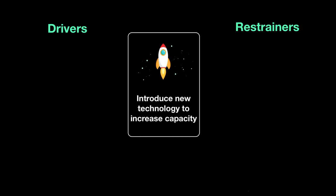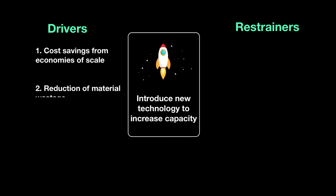The pros would be the drivers. The biggest pro is cost savings from economies of scale — you can produce more units. You will also reduce material wastage because computers don't make as many mistakes compared to human labor. And thirdly, it can also be used for improved customer service through the use of AI, making the online shopping experience more enjoyable.